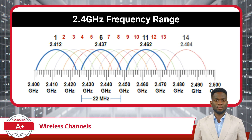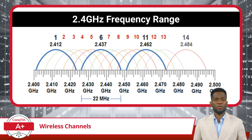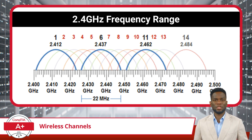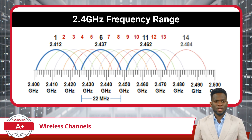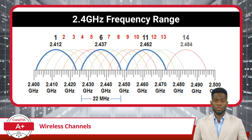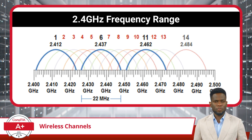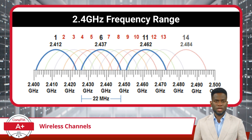By using these non-overlapping channels in areas with multiple wireless networks, such as densely populated residential or commercial areas, interference can be significantly reduced, ensuring more stable and efficient wireless communication.